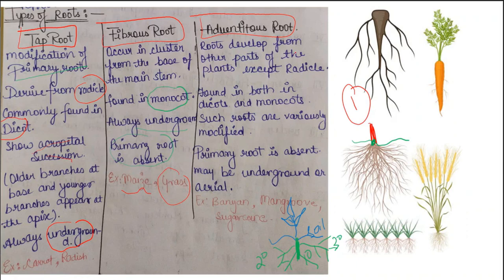The third type of root is adventitious root — the most common and important special type. These roots do not grow from the radicle; instead they arise from other parts of the plant like the stem and leaves. These are special types of root which do not develop from radicles. They can be found in both monocot and dicot plants. It is not necessary that they will always be underground — they may also be found in aerial conditions. Examples include banyan tree, sugarcane, and mangroves.